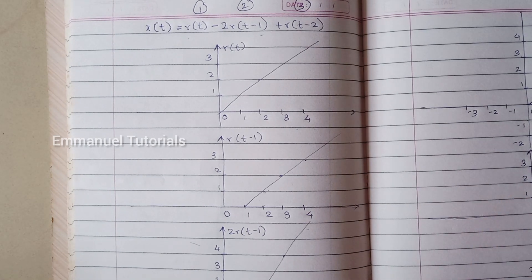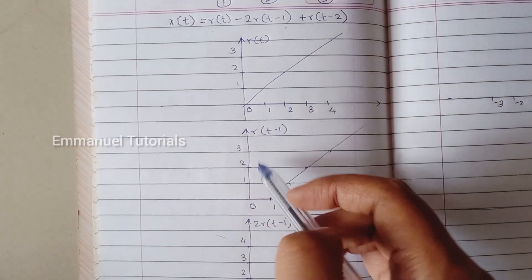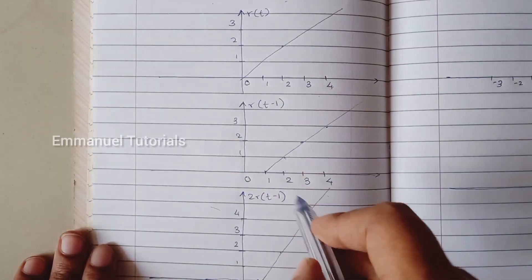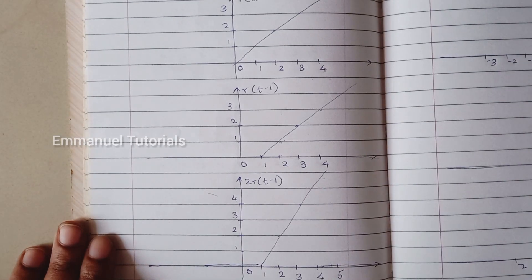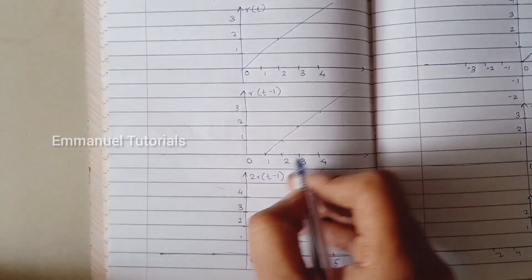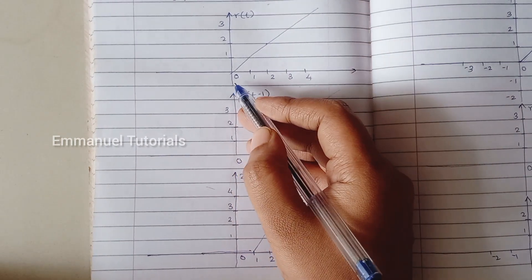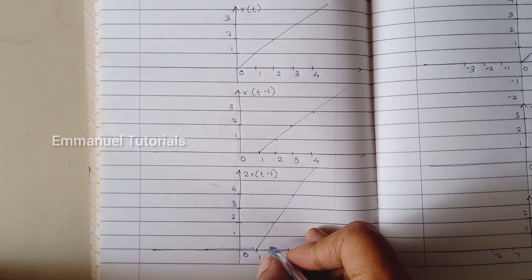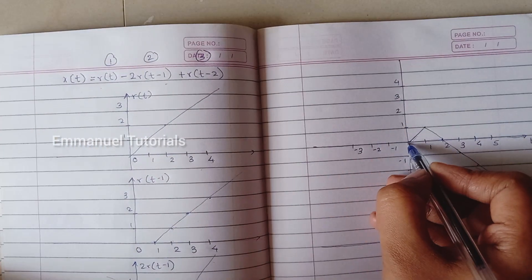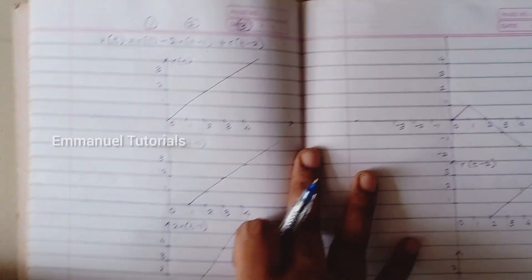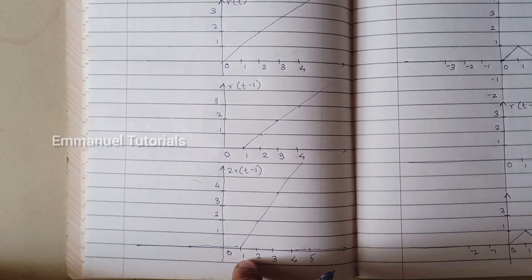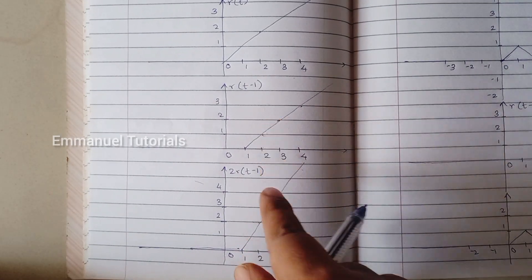Now, before we draw the third part, let's subtract the second signal from the first — that is R(T) minus 2R(T minus 1). Here, the first signal's amplitude is 0 at T=0 and the second signal's amplitude is also 0 at T=0. So 0 minus 0 is going to be 0. At T=1, first signal's amplitude is 1, second signal's amplitude is 0. So 1 minus 0 is going to be 1.